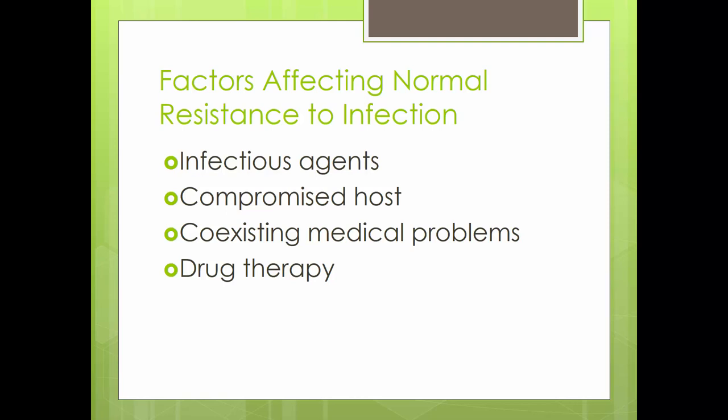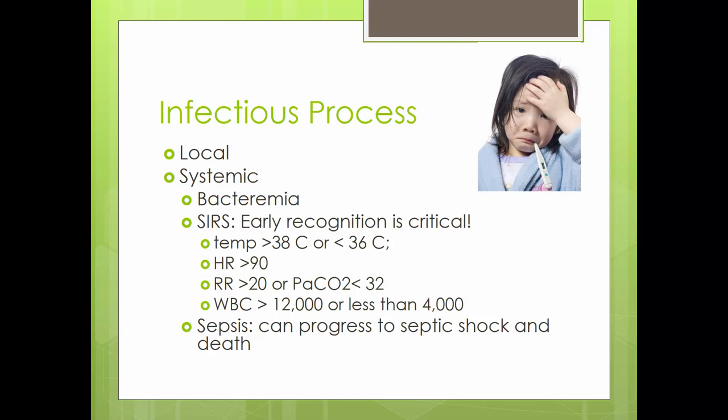Malnutrition decreases the body's ability to make antibodies and WBCs, making it hard to fight infection and increasing metabolic needs. Stress causes cortisol release, which suppresses the immune system and increases serum glucose — ideal for bacterial growth. Good glycemic control is imperative for hospitalized individuals, as it helps them get better faster. Leukemia increases the production of leukocytes, but they are immature and unable to fight infection. Drug therapy such as chemotherapy, steroids, and inappropriate antibiotic use all affect normal resistance.